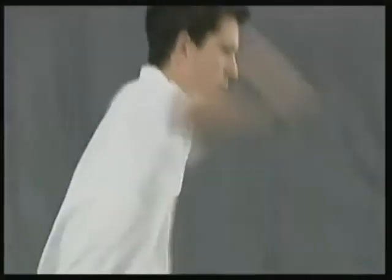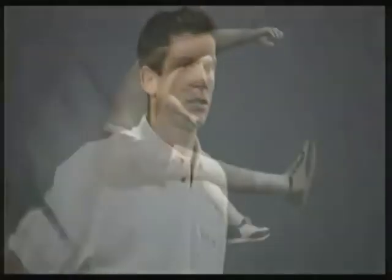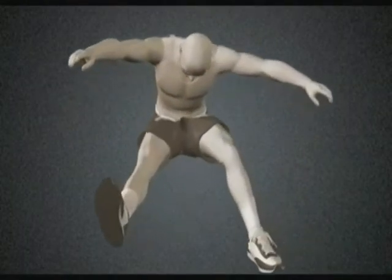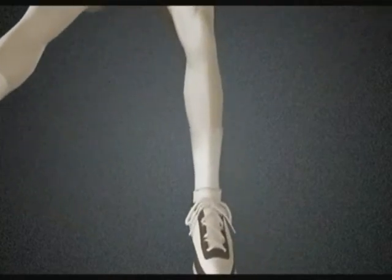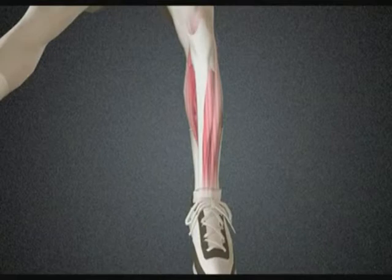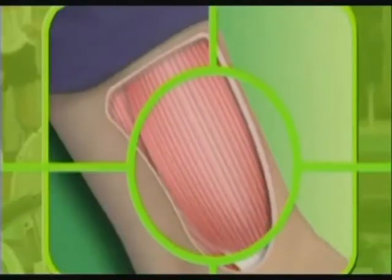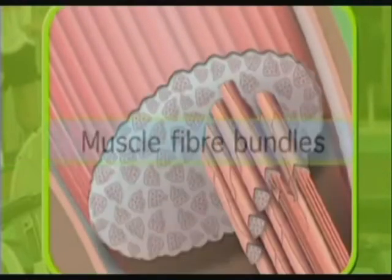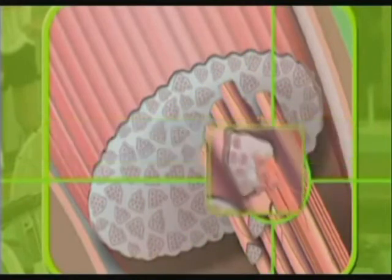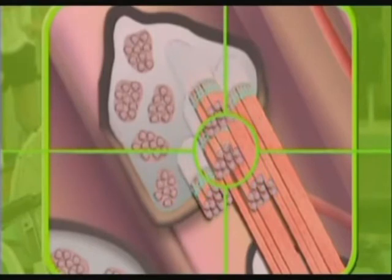While in combination muscles can produce complex movements, each individual muscle is only capable of two things: contraction and relaxation. To understand muscular contraction we'll need to examine the specialized cell structure of muscles. A muscle consists of bundles of muscle fibers, and these fibers are made up of smaller units called myofibrils.